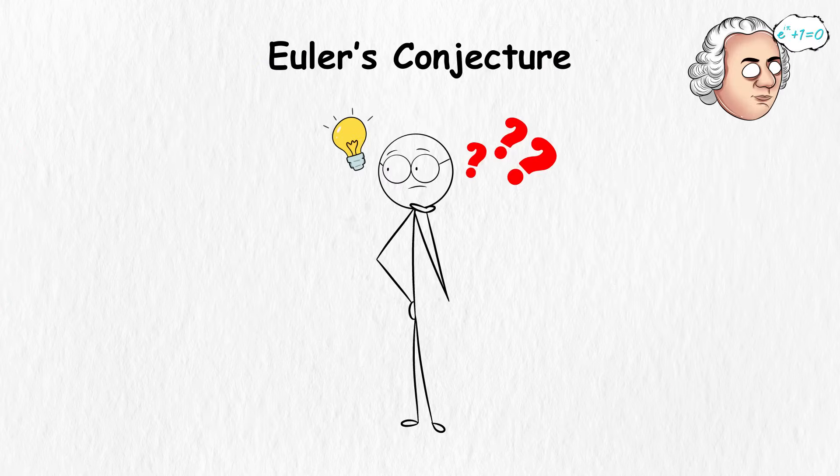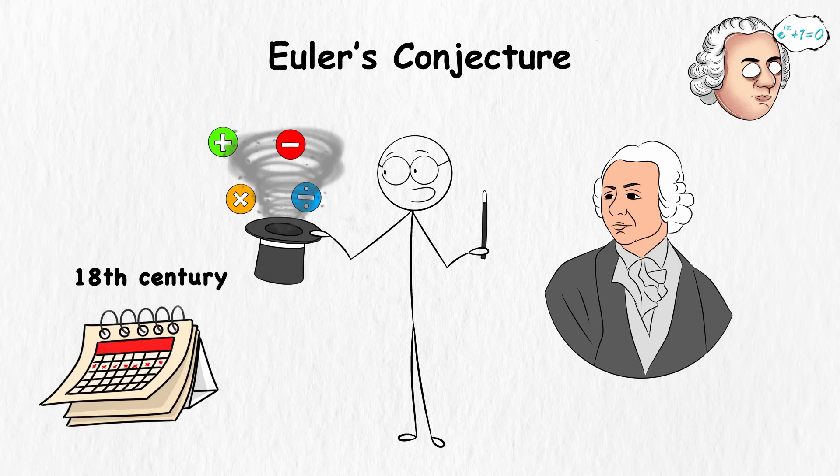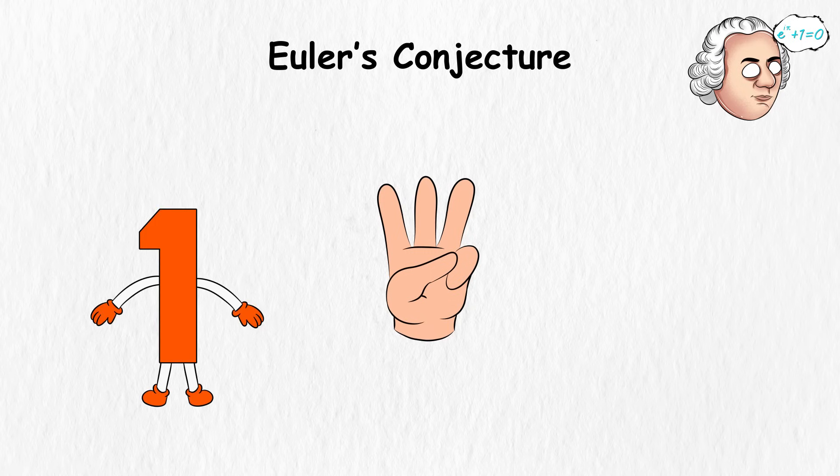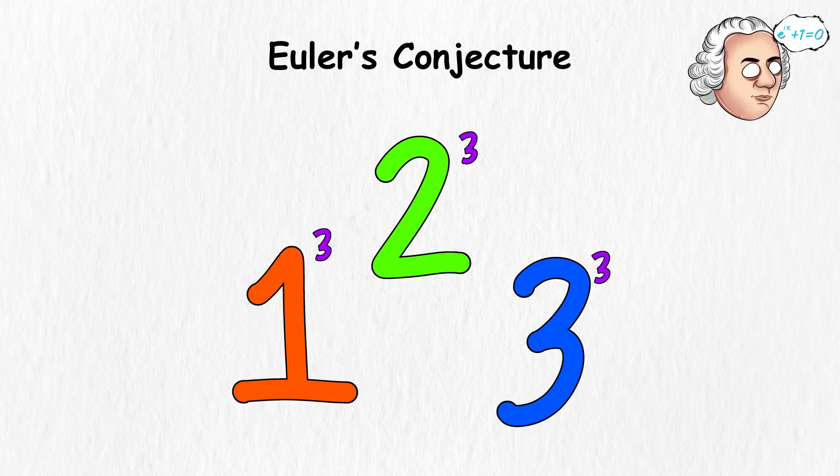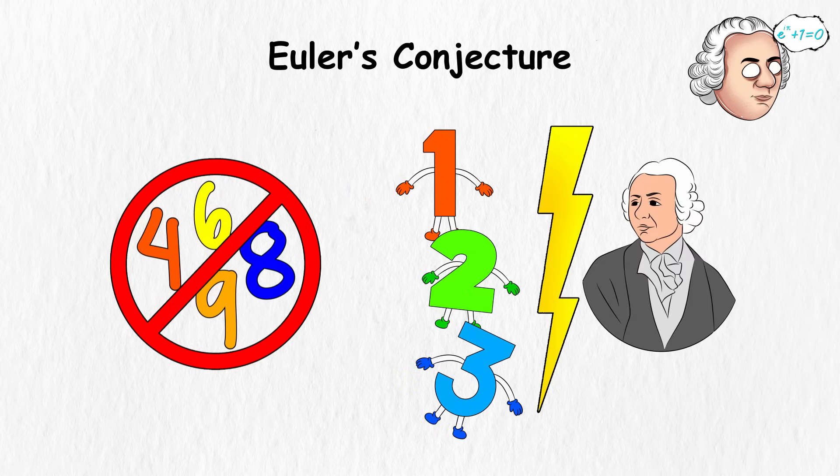Euler's Conjecture. Euler's Conjecture is like a math magician's trick gone rogue. Picture Euler, a math wizard from the 18th century, saying, if you take three positive whole numbers, like 1, 2, and 3, raise them to a power and add them up, you'll never get another number raised to that same power. It's like he's challenging numbers to a showdown and saying, you'll never get a matching power up.